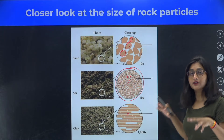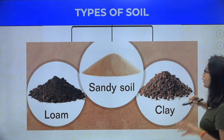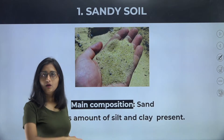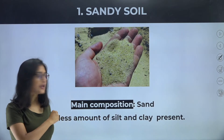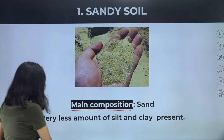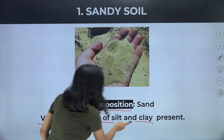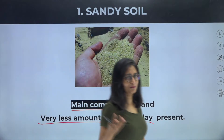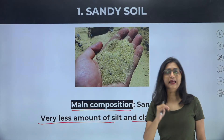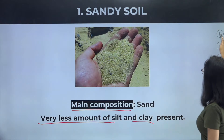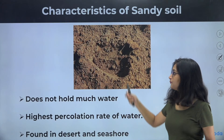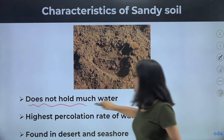This gives the basic differences between the soils. Having a closer look at sandy soil — the main composition is purely sand, with very little silt and clay present. Soil is basically a mixture, so there are small amounts of other soil particles, but majorly you're going to find sand. Sandy soil has many uses — even in construction, we use sand in a very large amount. Sandy soil does not hold much water.